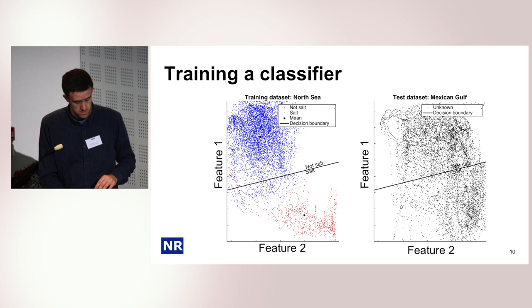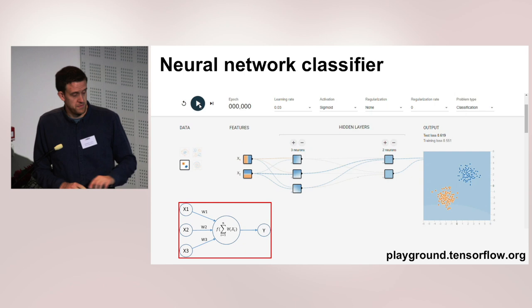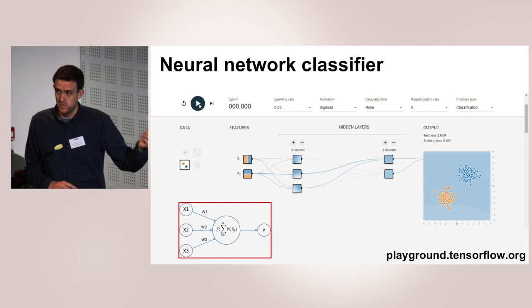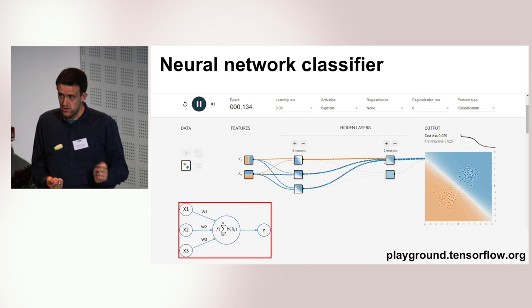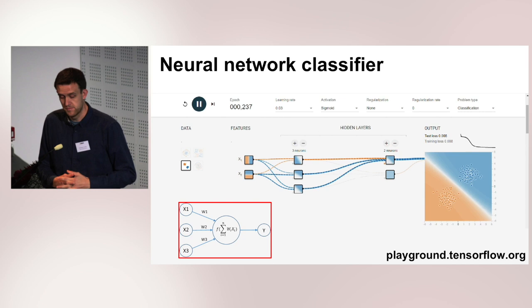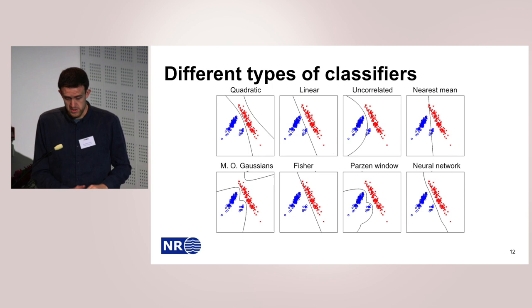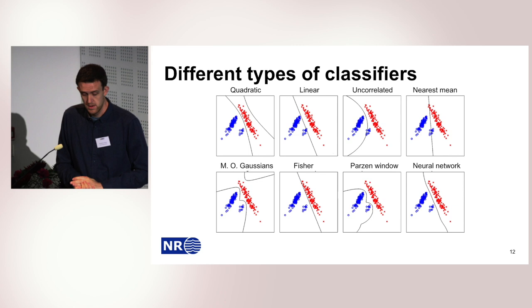A more advanced classifier is a neural network. It consists of input features connected to a layer of units, where each unit takes the inputs, applies weights, and sums them. We gradually tune the weights to increase accuracy on our training data, finding a decision boundary between the two classes. There are many such classifiers, each with different properties, all drawing some line in the feature space.